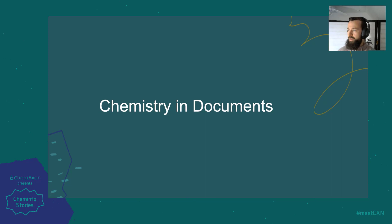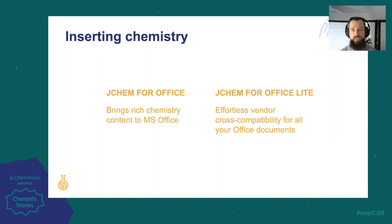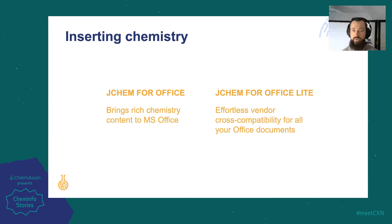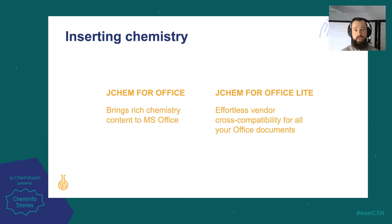We'll now move on to speaking about how our tools can help you handle the chemistry present in your unstructured documents. The JChem for Office suite enriches popular Microsoft Office desktop applications — Excel, Word, PowerPoint, and Outlook — with a vast body of cheminformatics functionalities, including the drawing of live structures, calculation of structural properties, substructure searching, reaction enumeration, and many more. JChem for Office Lite puts the focus on molecule drawing and editing while significantly improving the user experience when working with software from multiple vendors, by allowing in-office editing of structures using whatever your preferred desktop editing tool is.